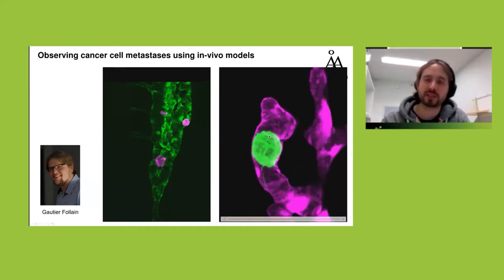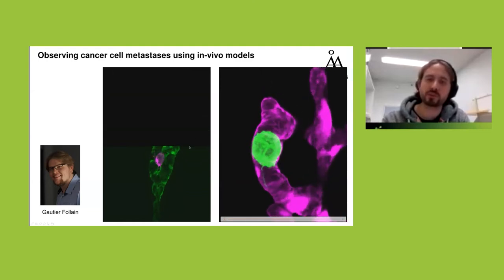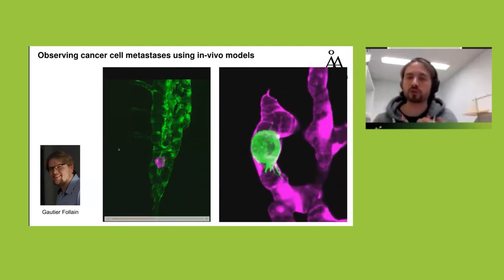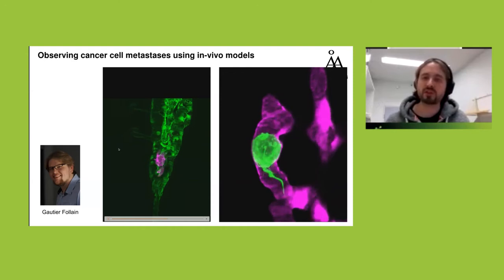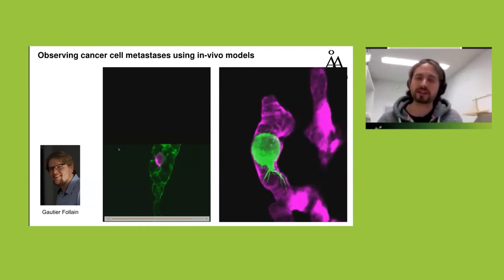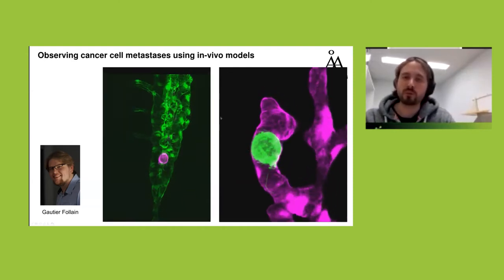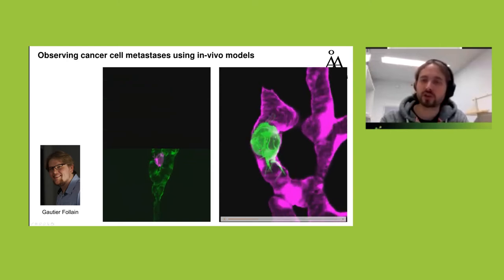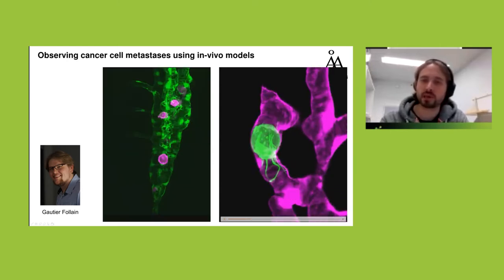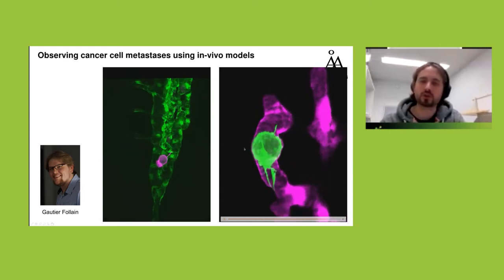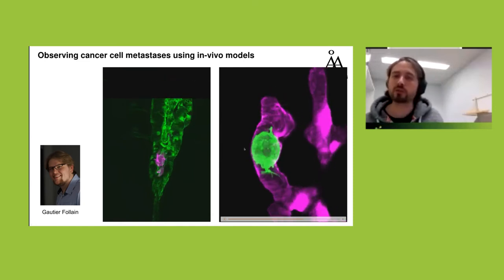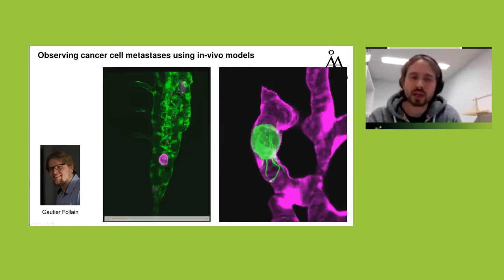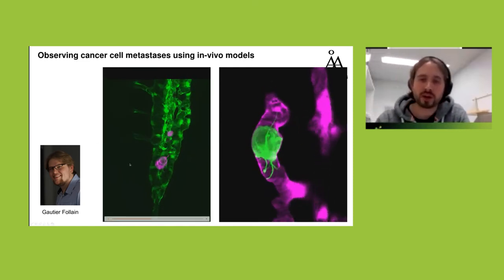We inject cancer cells directly into the vasculature of zebrafish embryos to understand how they survive and escape. Here is an example of a pancreatic cancer cell labeled for actin, stuck in the vasculature labeled in magenta. We're trying to understand how the cell interacts with and escapes from the vasculature — this is work done by Gautier Follarin in my lab.